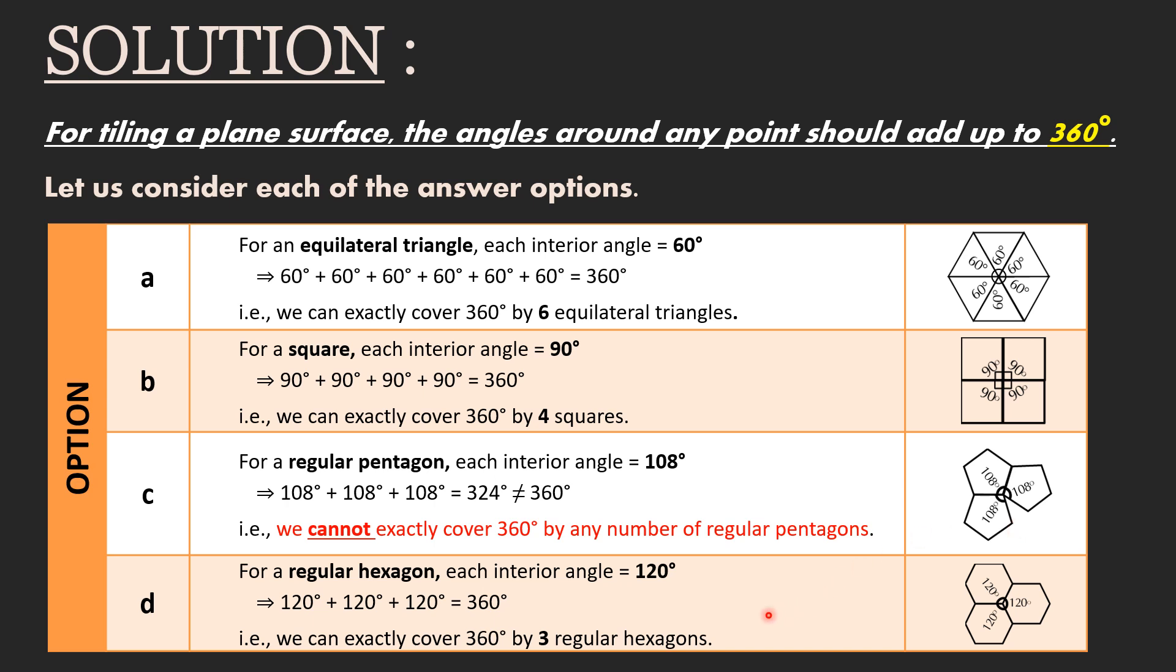Finally, let us consider option D. For a regular hexagon, each interior angle equals 120 degrees. 3 times 120 degrees equals 360 degrees. That is, we can exactly cover 360 degrees by 3 regular hexagons.